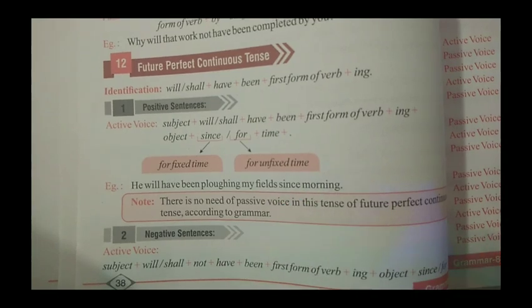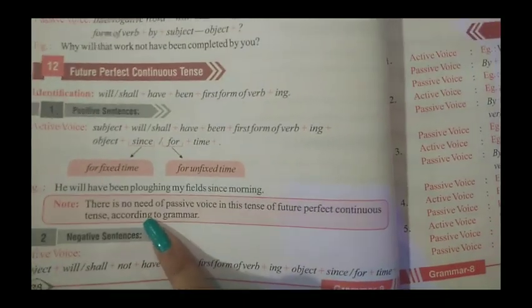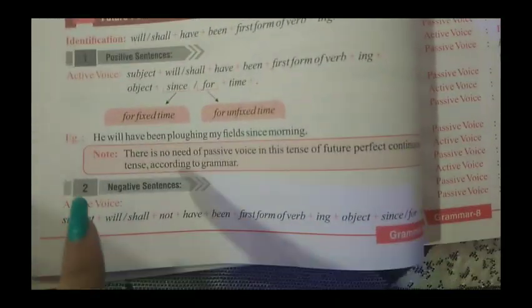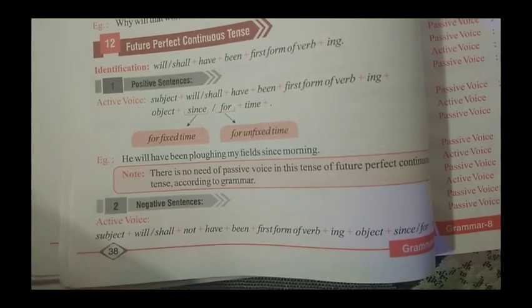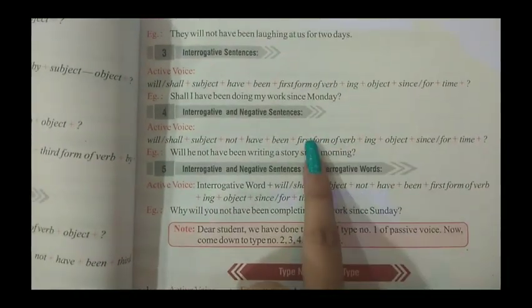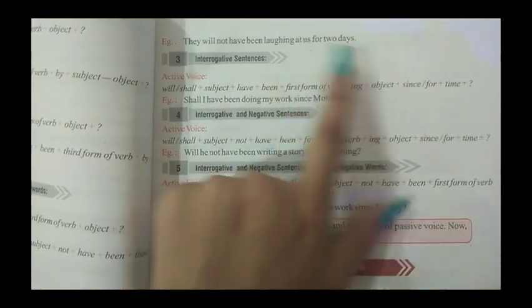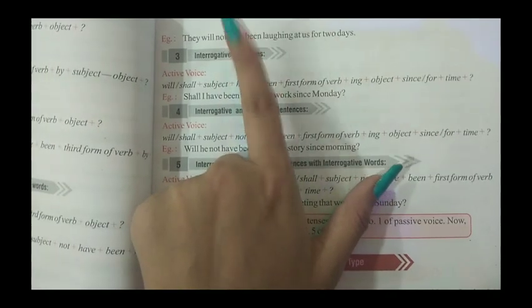Note: There is no passive voice needed in future perfect continuous tense according to grammar. In a negative sentence, the rule remains the same — we add 'not'. For example: 'We will not have been laughing at us for two days.' So 'not' is added in a negative sentence.